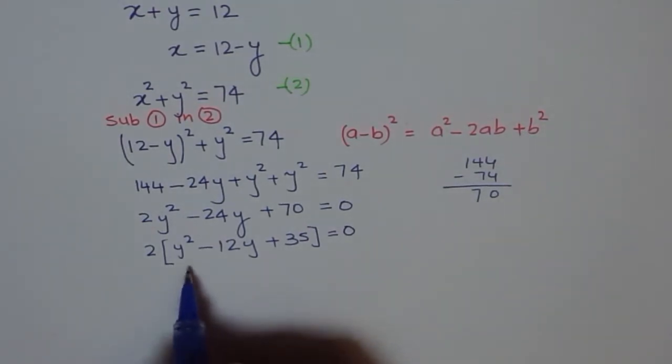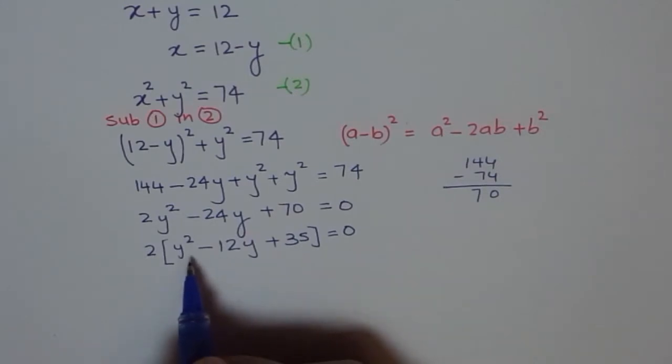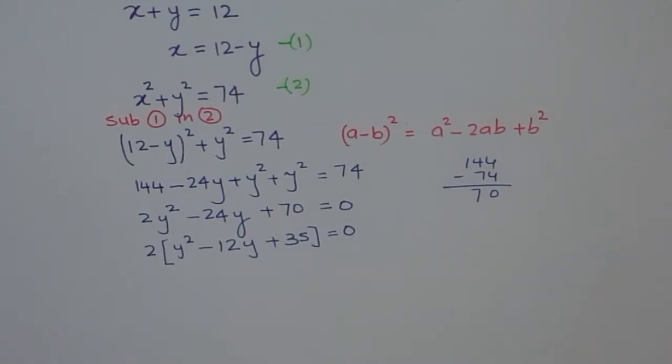Now, 2 cannot be 0 but the factor inside can be 0. So, let's see. It's a quadratic function. We can use product and sum to factor this out.